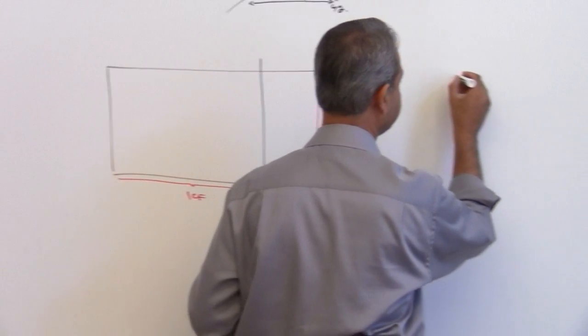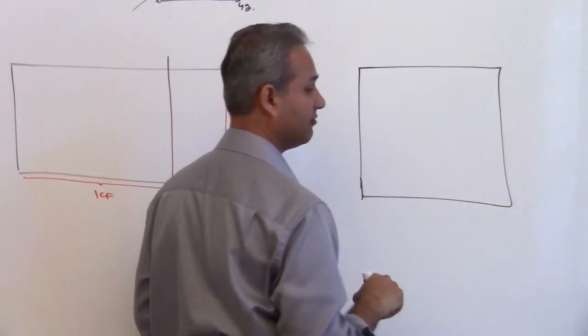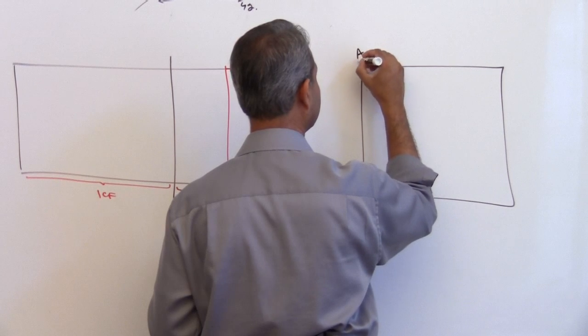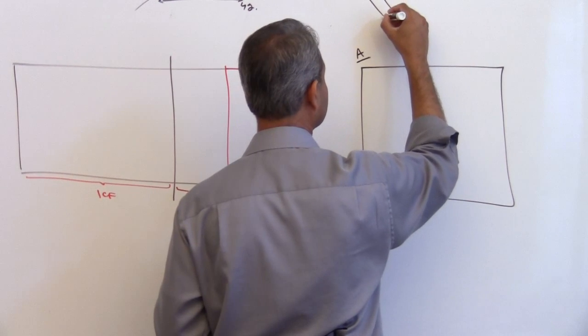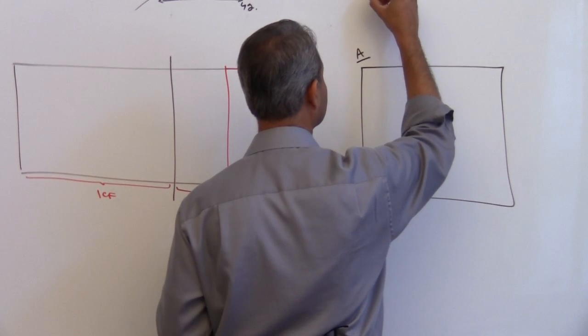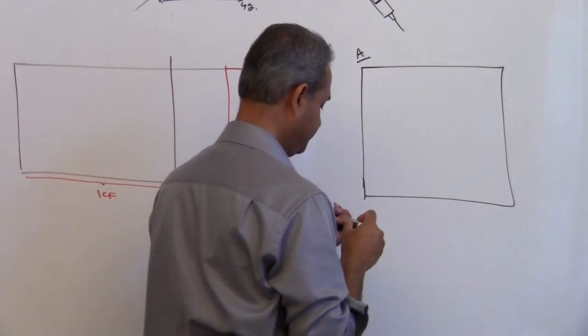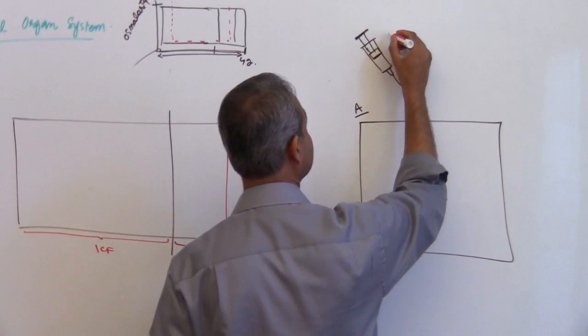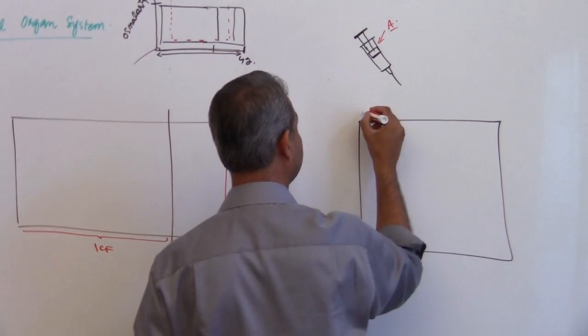So the way it is done is this. Let's say I have a compartment, let's say the compartment is A, and then let's say I have an injection. So I have two compartments here. One compartment is this syringe, so let's say this is compartment A, this is compartment B.